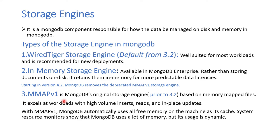There was one more engine available in versions prior to 3.2: the MMAPv1 storage engine. It was considered one of the most successful memory-based engines because it efficiently utilizes the available memory on the system. It is dynamic in nature — whenever another process needs memory, it will release it.